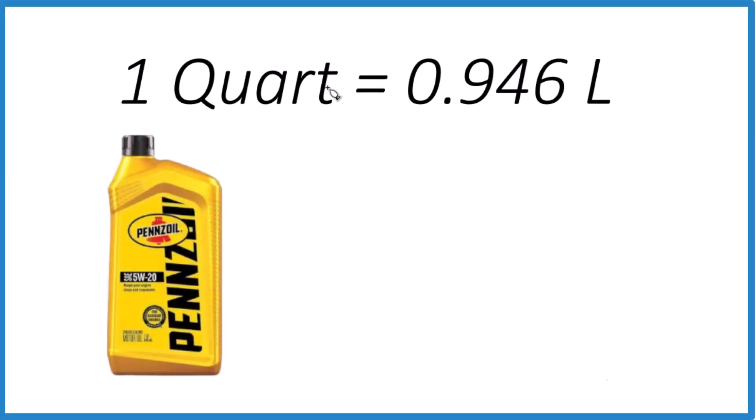So you might be wondering, how many liters are in one quart? And it turns out that one quart is 0.946 liters. Some people round that to 0.95 liters. So it's pretty close.